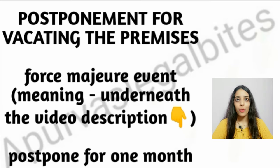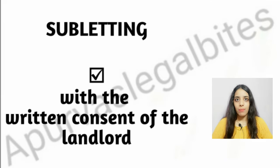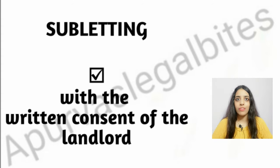Next, postponement for vacating the premises. If a force majeure event occurs, the landlord will allow the tenant to postpone vacating the premises for one month from the date of cessation of such unforeseeable event as per the provisions of the existing tenancy agreement. Next, subletting. Subletting of premises will be allowed only with the prior consent of the landlord, and the tenant will be restrained from undertaking any structural change in the premises without the consent of the landlord.